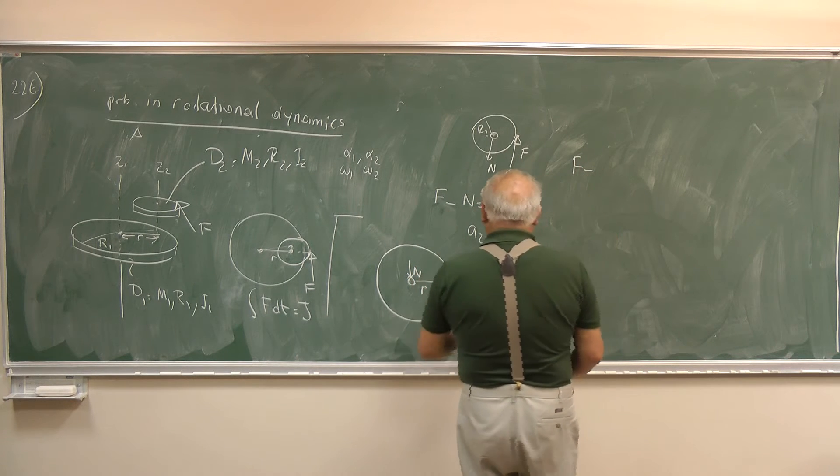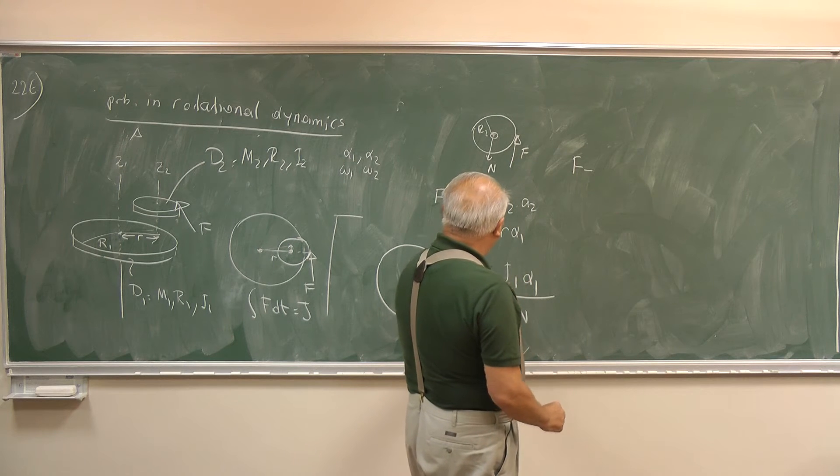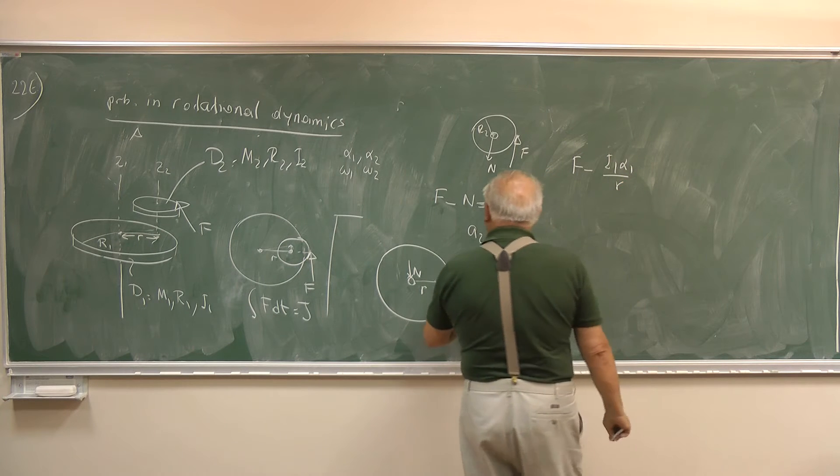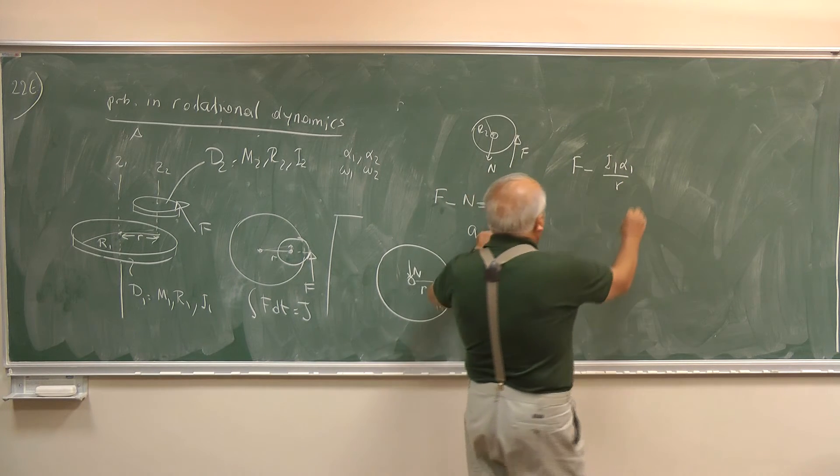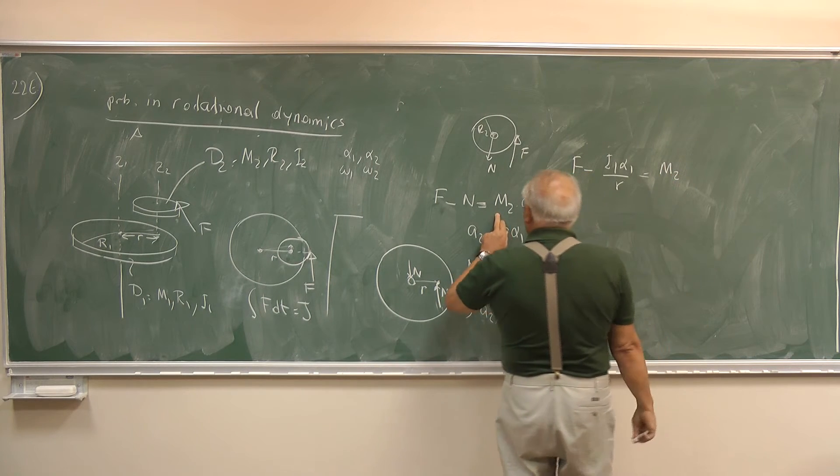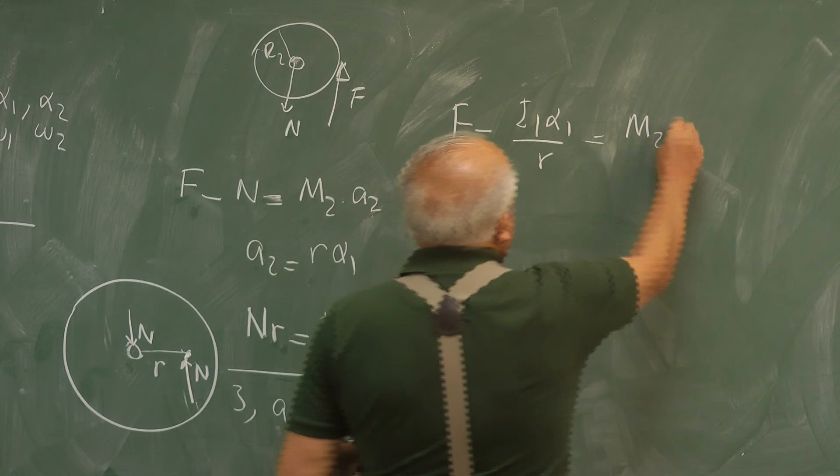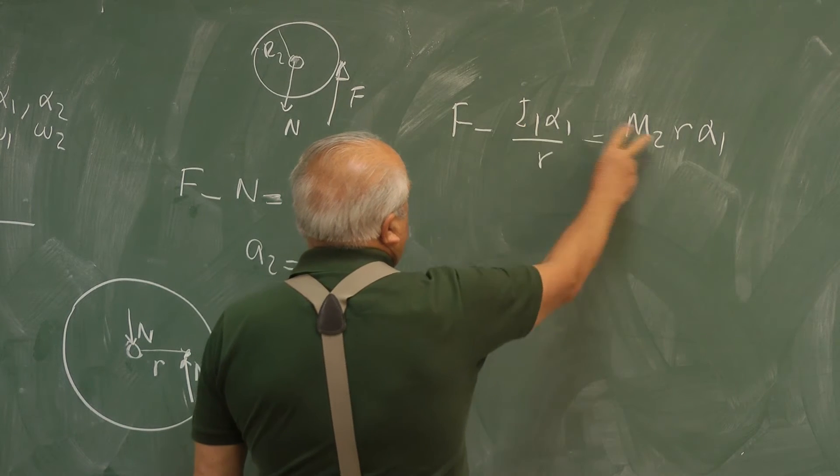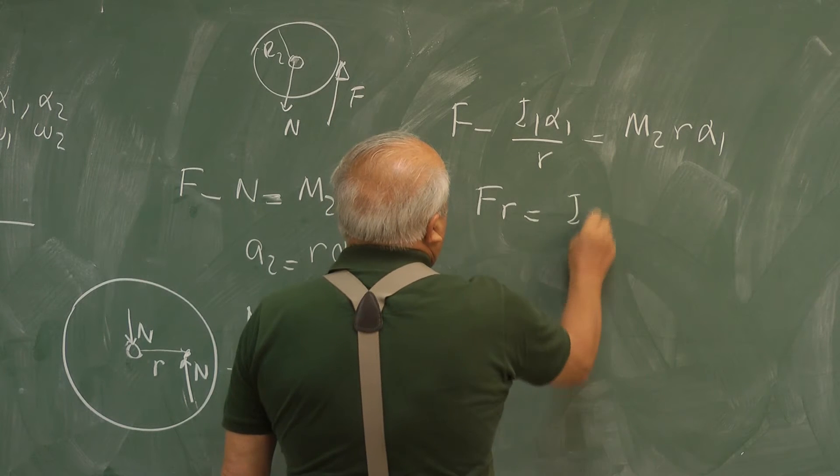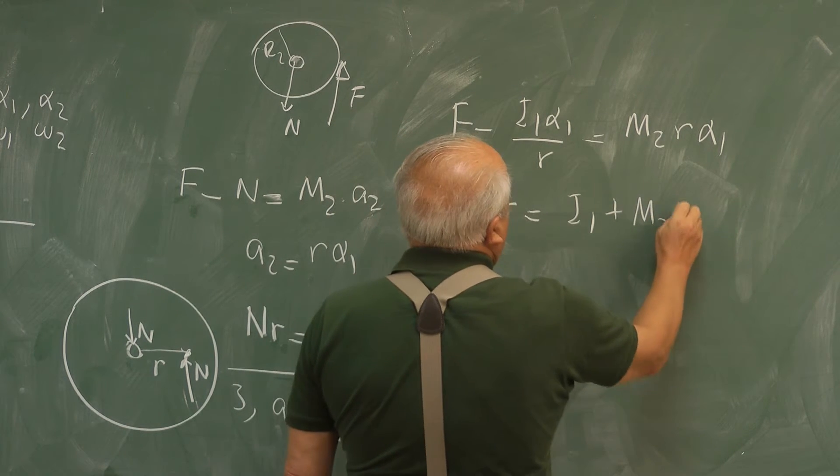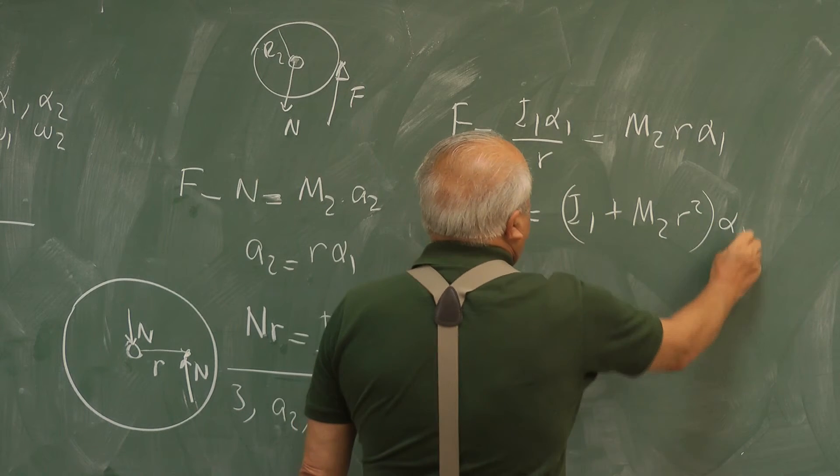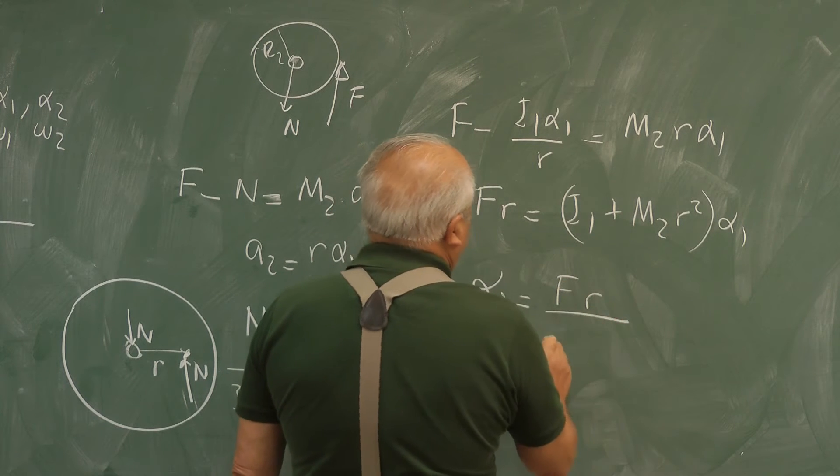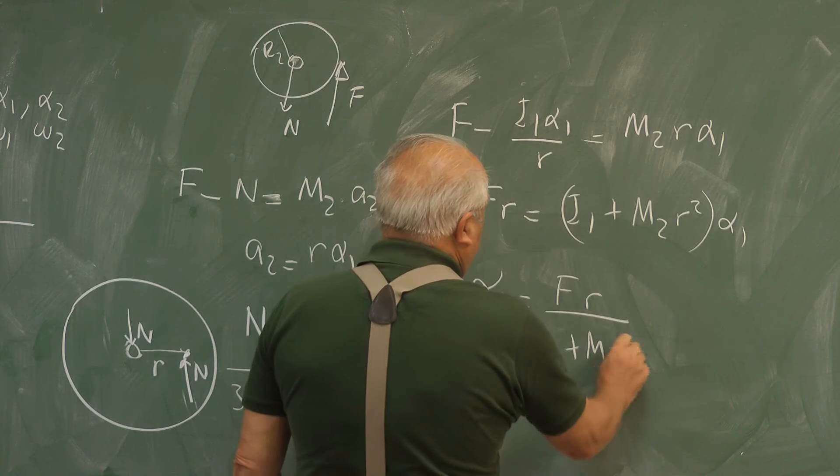F minus, for N I will write this one, I1 α1 divided by R is equal to M2 A2. R α1. So if I multiply by R and take it to this side, FR is equal to I1 plus M2 R2, α1. And α1 is equal to FR over I1 plus M2 R2.